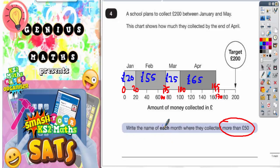So write the name of each month where they collected more than £50. Well 20 is not more than 50 so we're not writing January but 55 is more than 50 so we do need to write Feb, we could write February but they'll know what even they haven't written February so they've just written Feb. So Feb would be okay if you're not sure how to spell February. If you do want to write the full month there we go February.